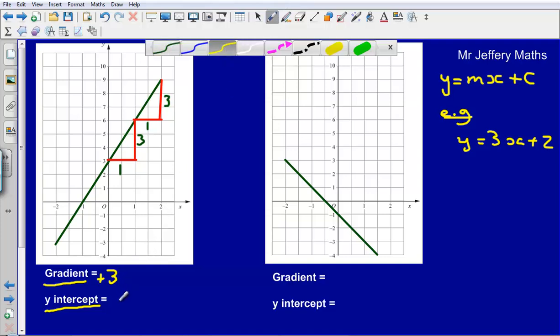Now our y-intercept is simply where the graph cuts the y-axis. So we can see here that the y-axis is the one that goes up and down, so the vertical axis. And we can see that the y-axis is being cut by the graph at 3.